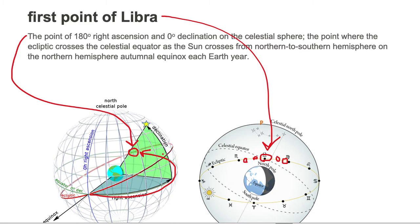On this modern day celestial sphere, you find the ecliptic, draw in the summer suns and then the fall suns, then find the one which is the first day of fall — that is going to be your first point of Libra. So we know it's the back one, not the front one. The front one is the first point of Aries, or the first day of spring.